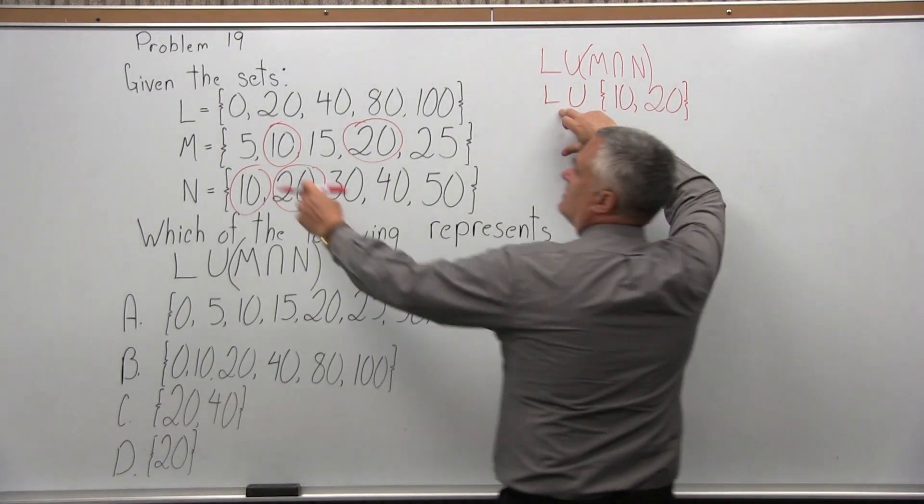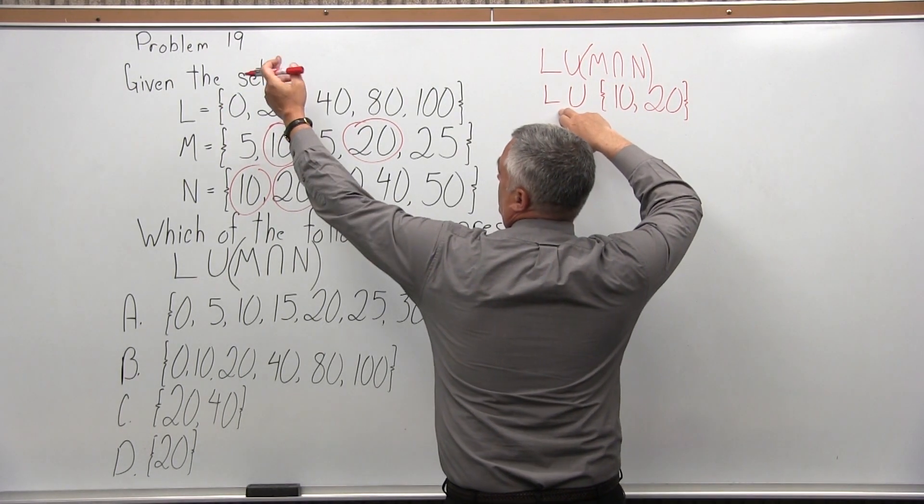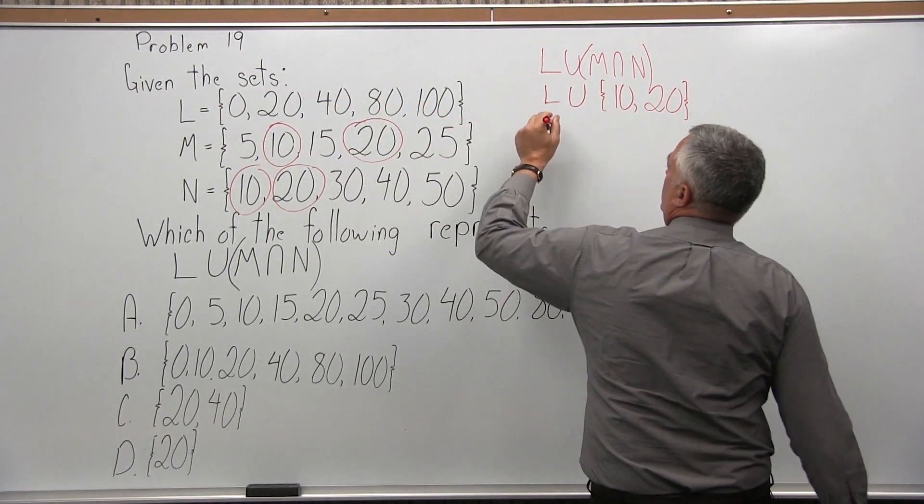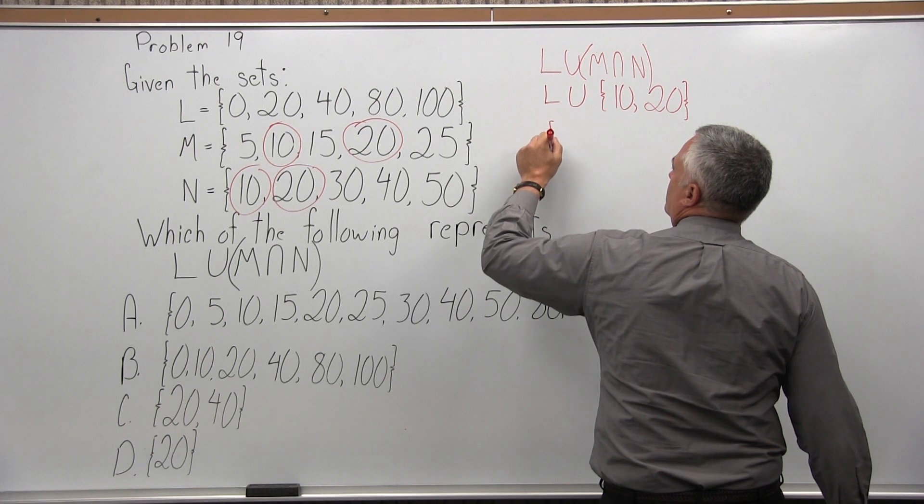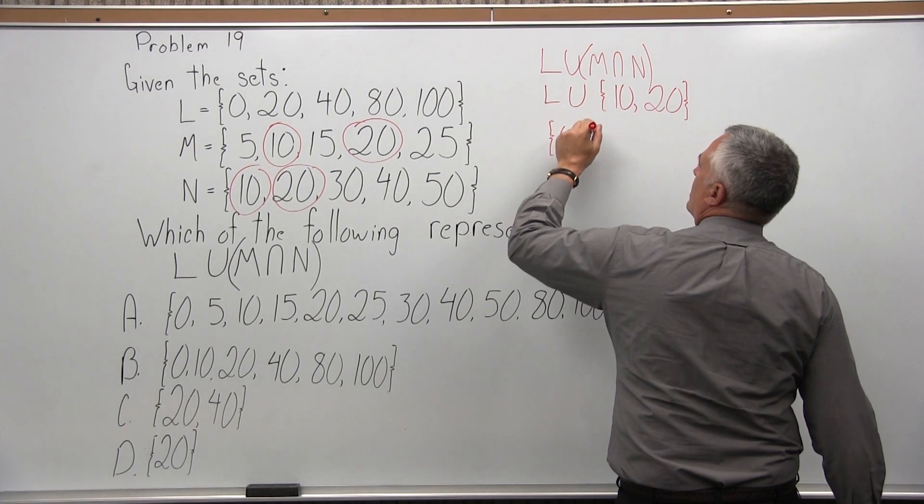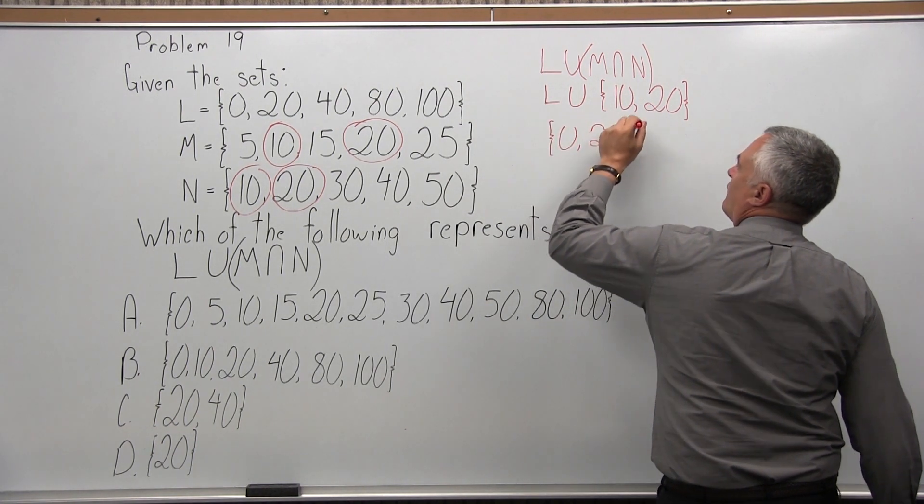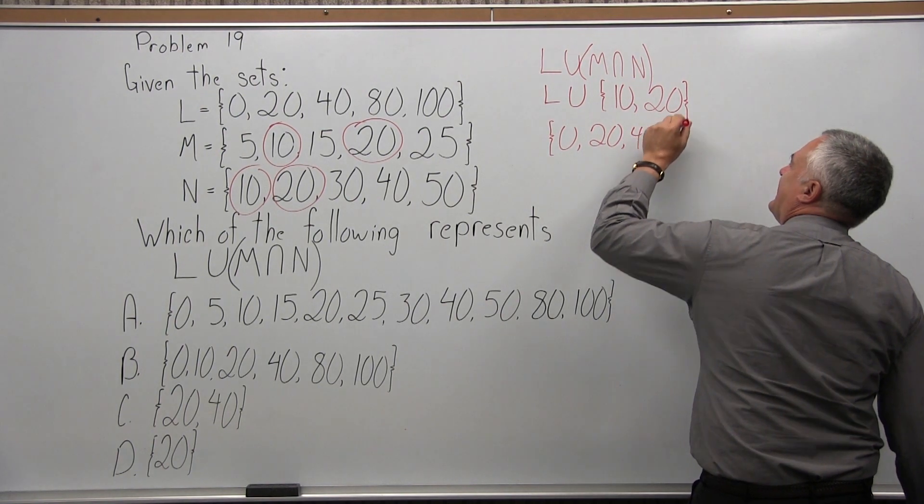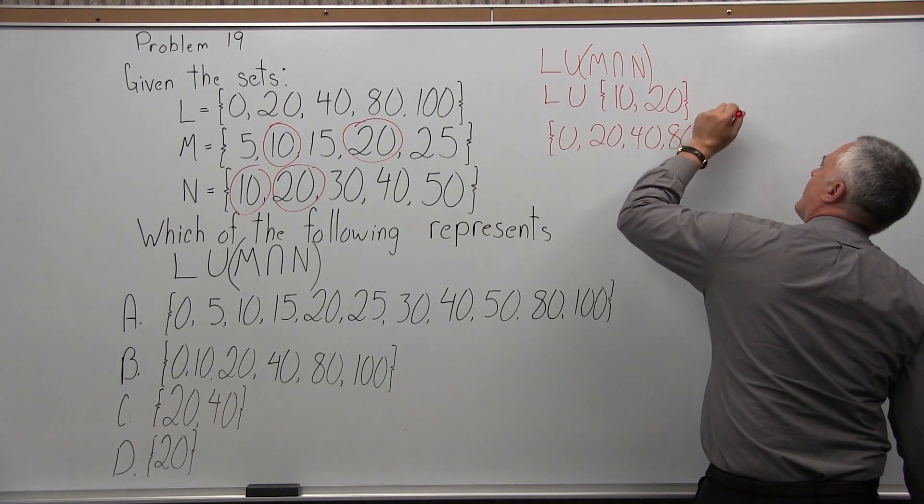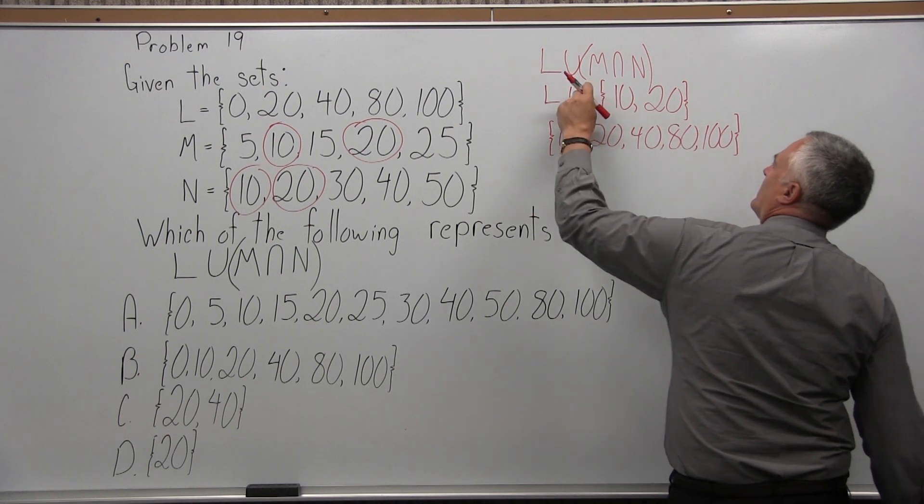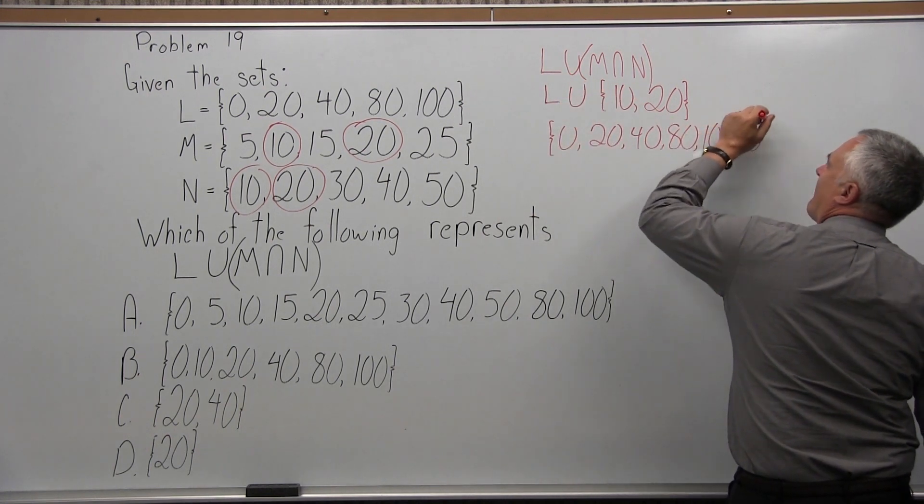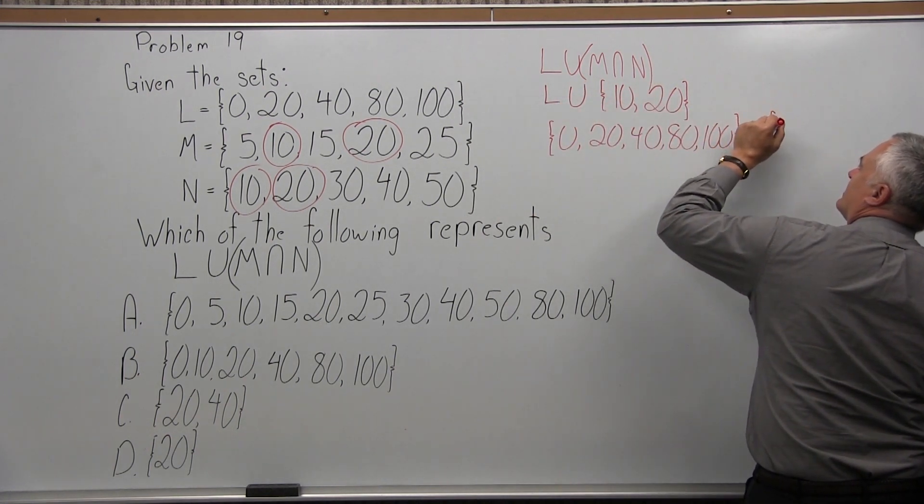So the set L is given. So L is the one on top: 0, 20, 40, 80, 100. So I'm going to do the set L, which again is 0, 20, 40, 80, 100. And I'm going to do a union with a set that just has 10 and 20.